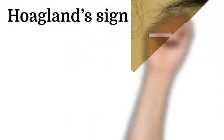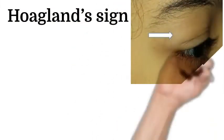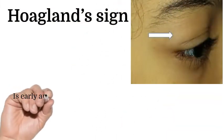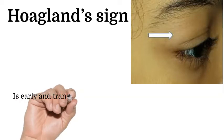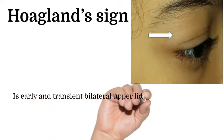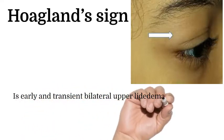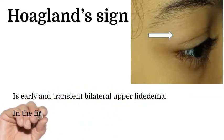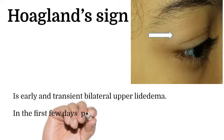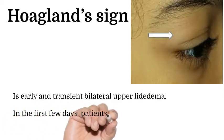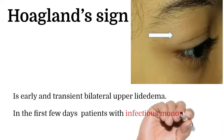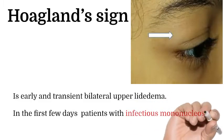Hoagland sign is an early and transient bilateral upper lid edema. This is seen in the first few days in patients with infectious mononucleosis.